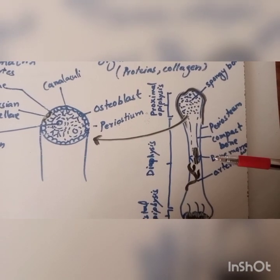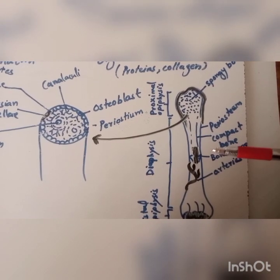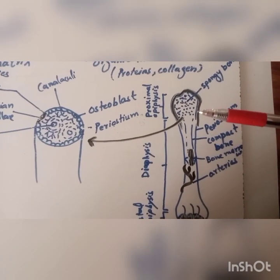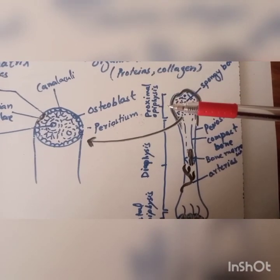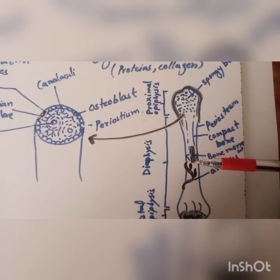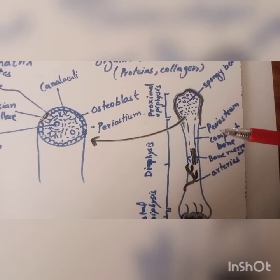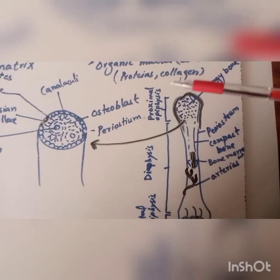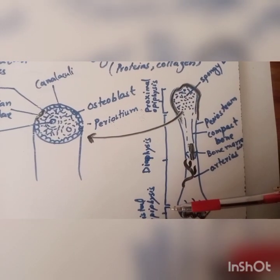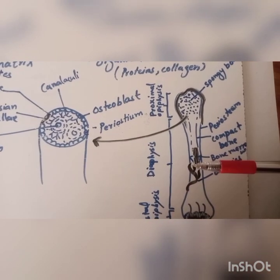Many bones also contain soft tissue called bone marrow, which can be either red, that is present in the epiphysis, or yellow, that is present in the diaphysis. Red bone marrow is found in the spongy bone, the ends of the long bones. They are called proximal and distal epiphysis, and they produce red blood cells.